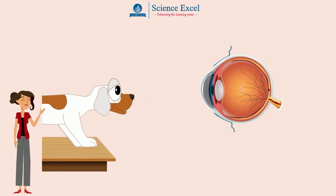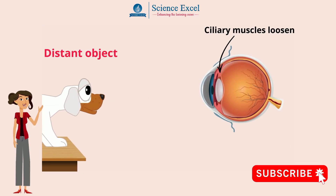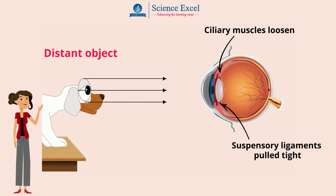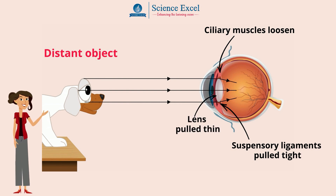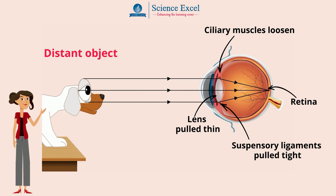If you are looking at a distant object, the ciliary muscles relax or loosen and the suspensory ligaments are pulled tight, and the lens is pulled thin into an elliptical shape. Light rays are refracted as they pass through the lens and focus on the retina. The distant object is in focus.